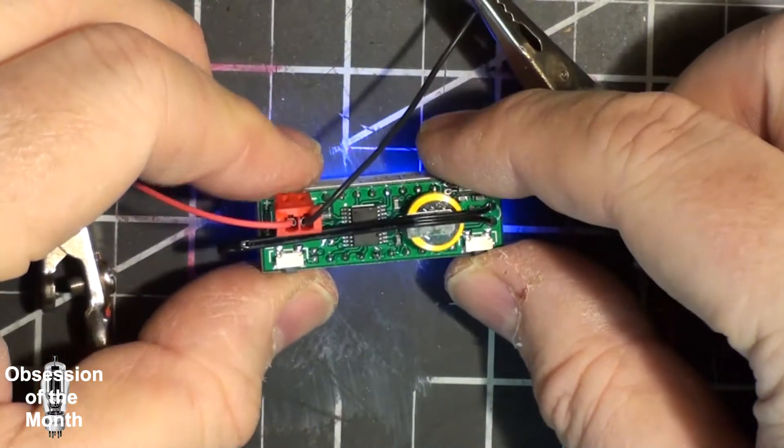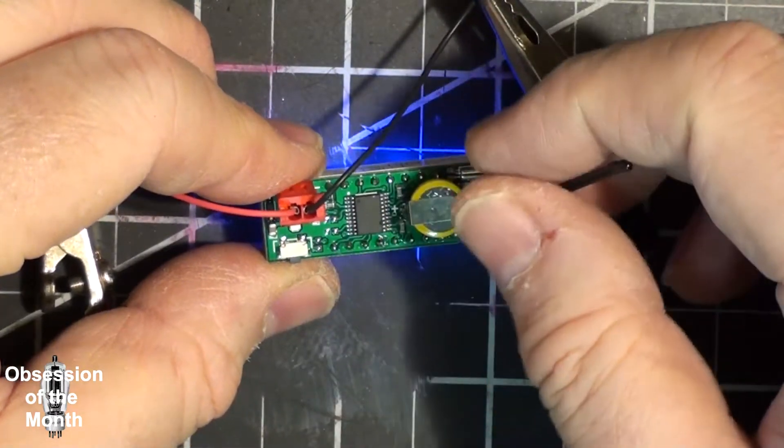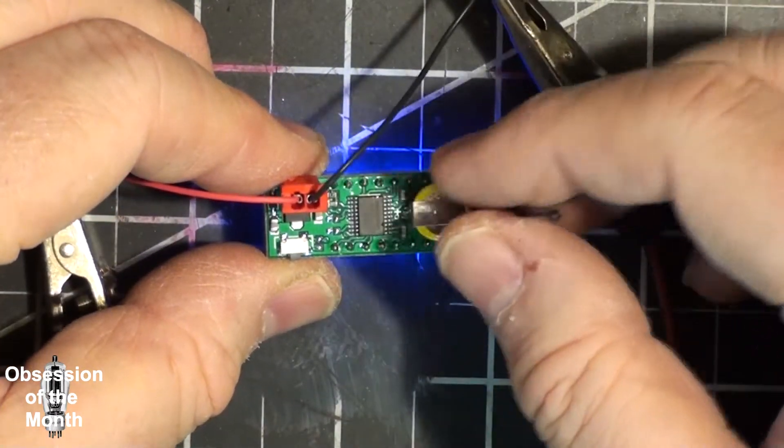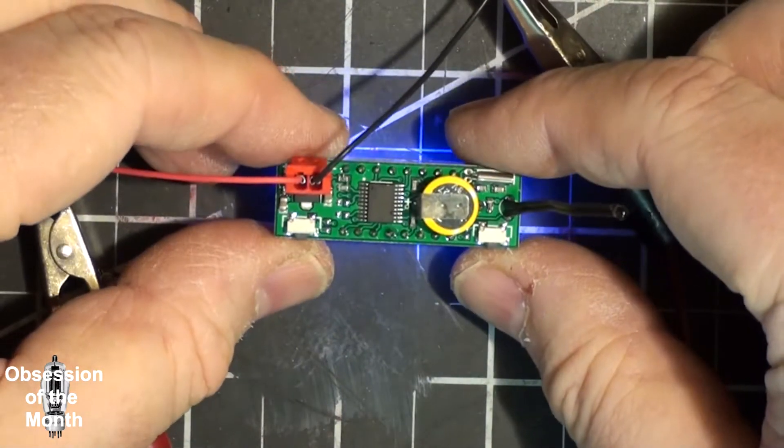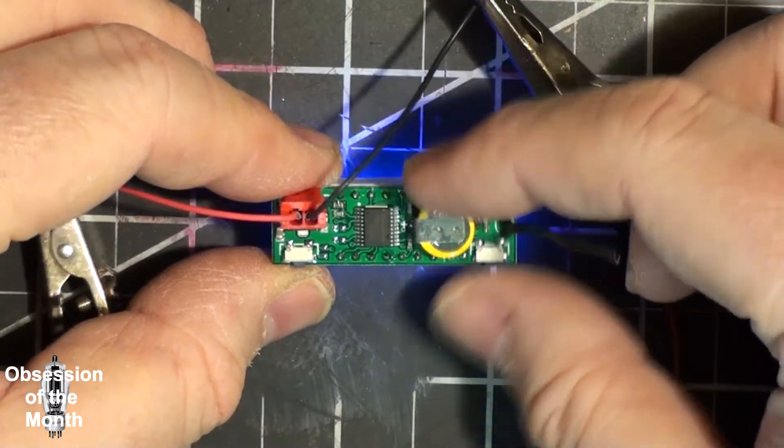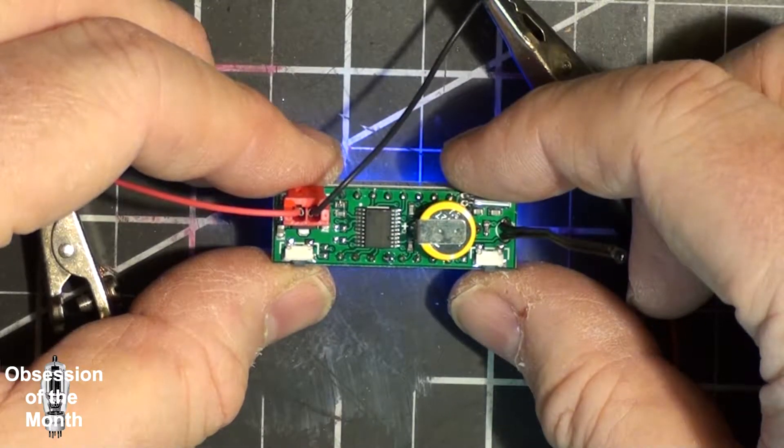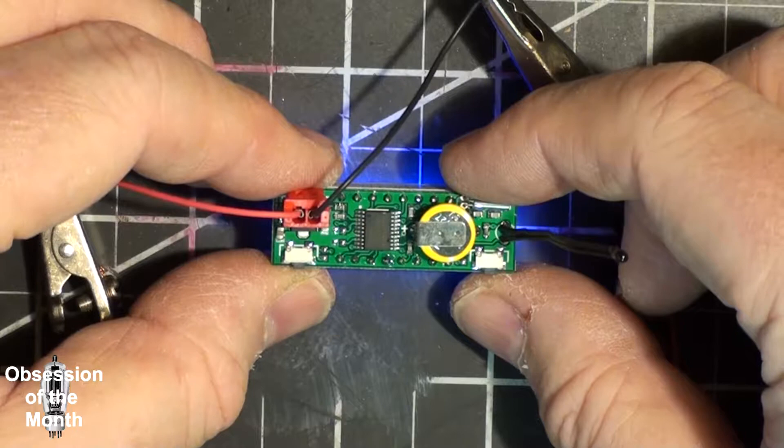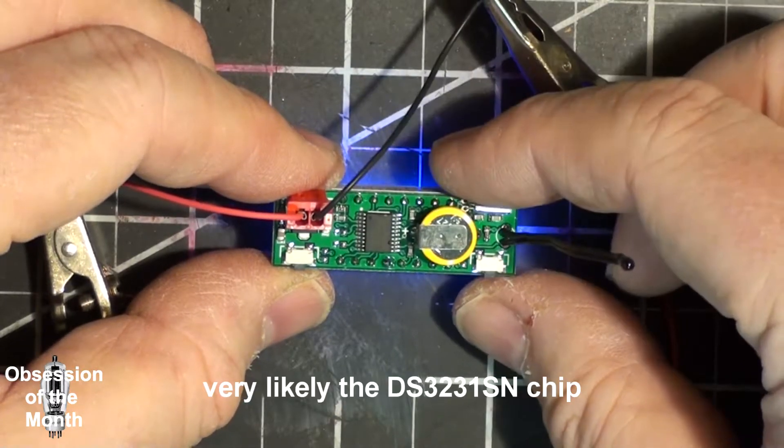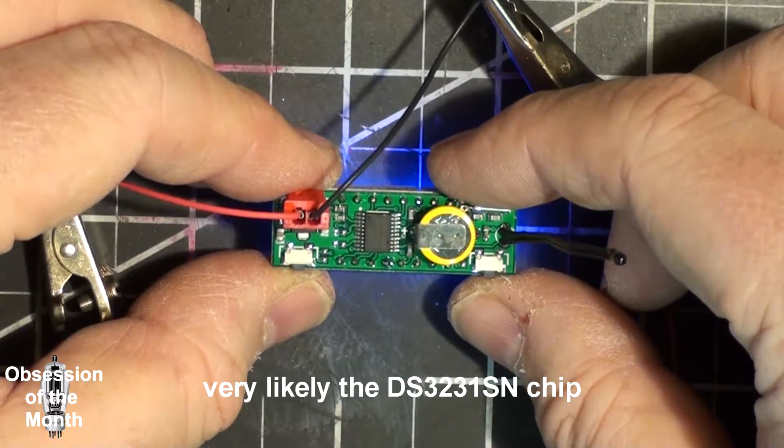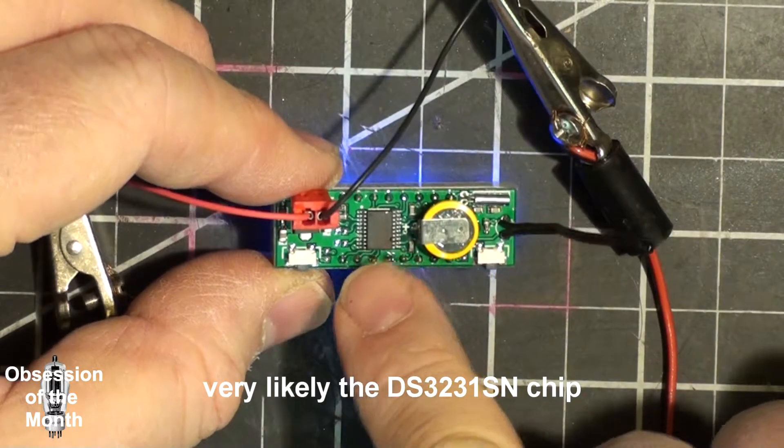If you look on the back here, you'll see that there is a temperature probe. There is a backup battery, and underneath the backup battery is a chip that without removing the battery I can't read what it is.